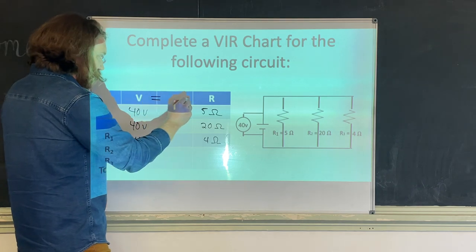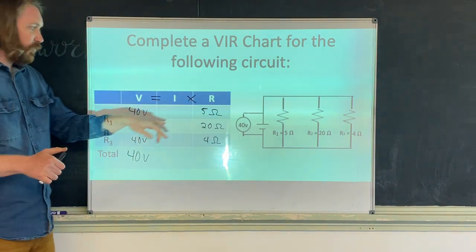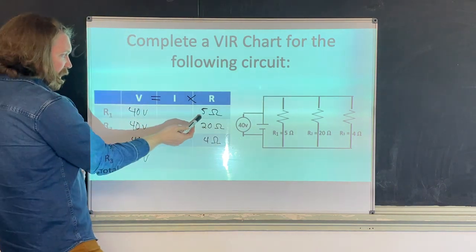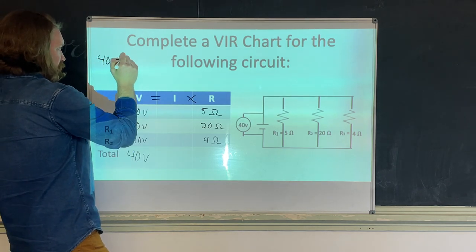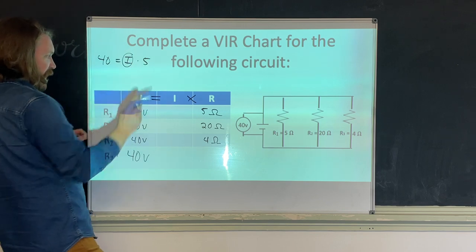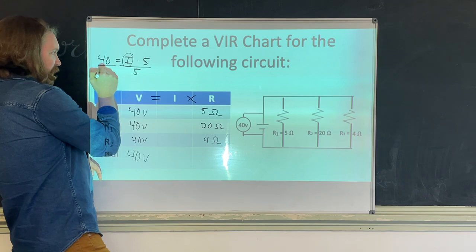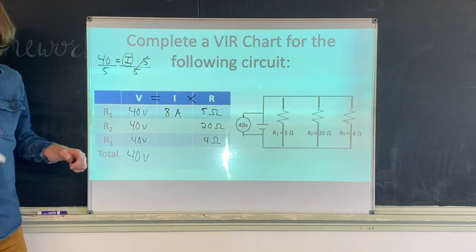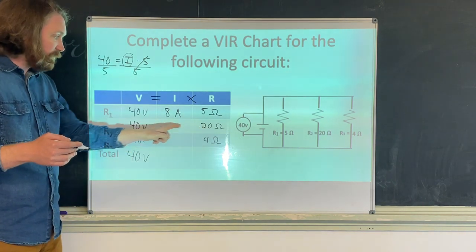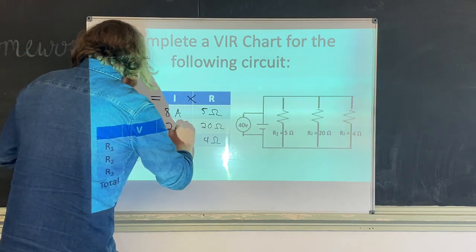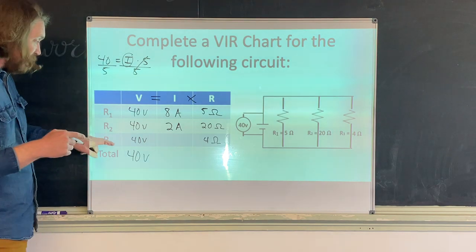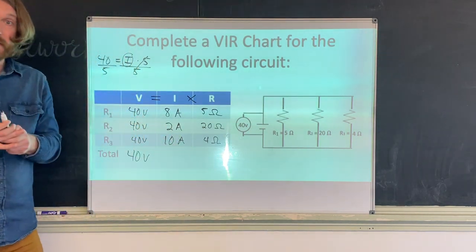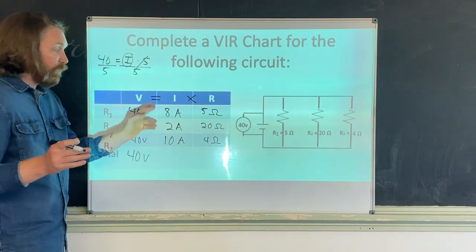Using V = I × R, we can find each current. For R1: 40 = I × 5, so I = 40/5 = 8 amps. For R2: 40 = I × 20, so I = 40/20 = 2 amps. For R3: 40 = I × 4, so I = 40/4 = 10 amps. All currents add up to the total: 8 + 2 + 10 = 20 amps total current.